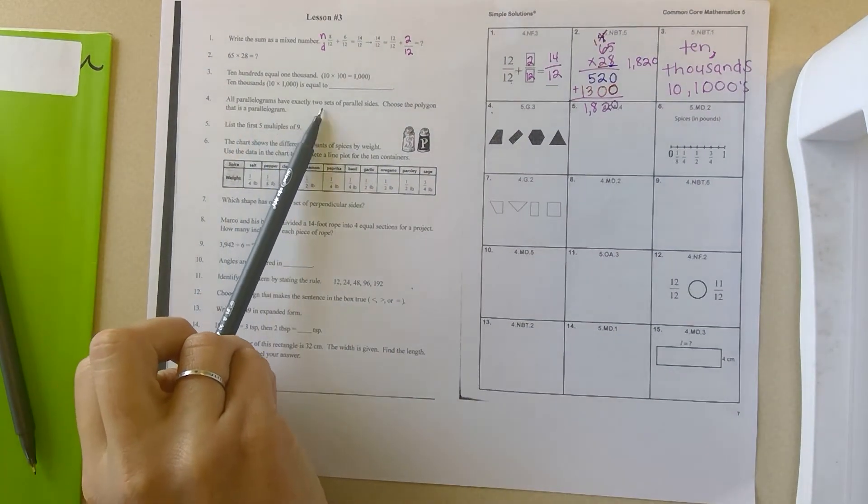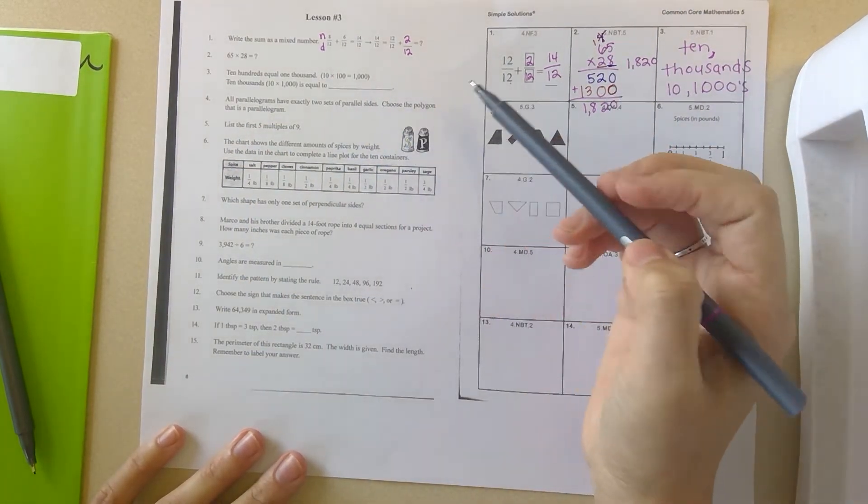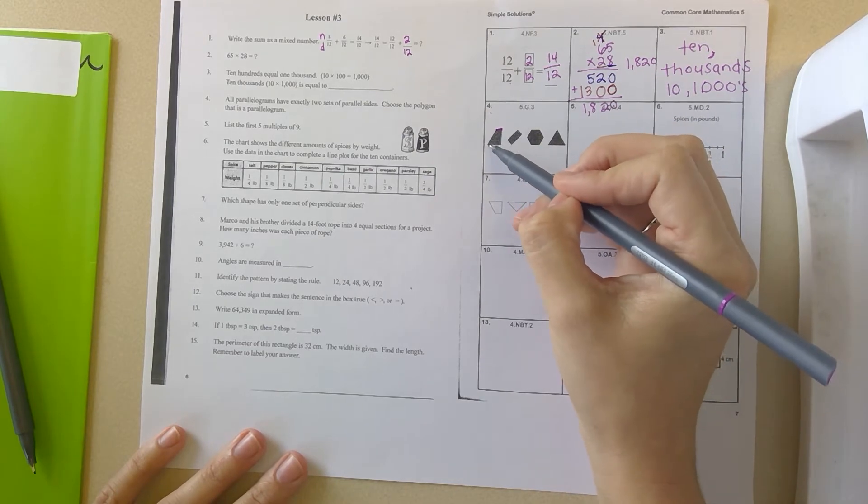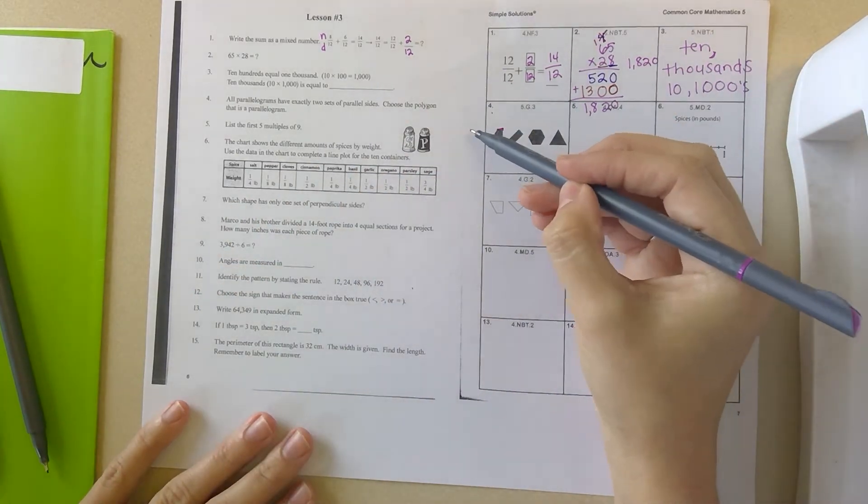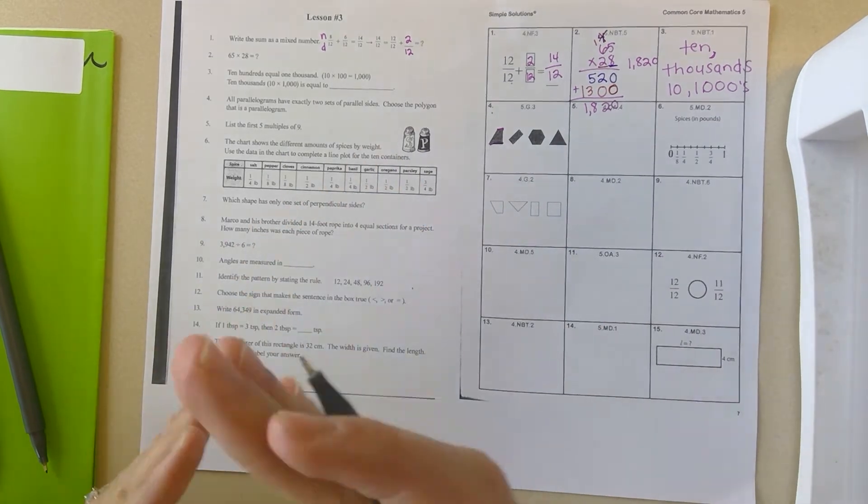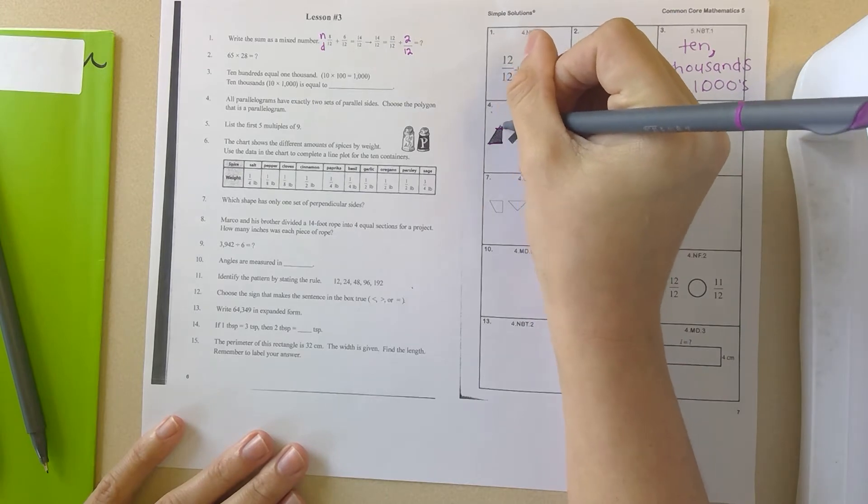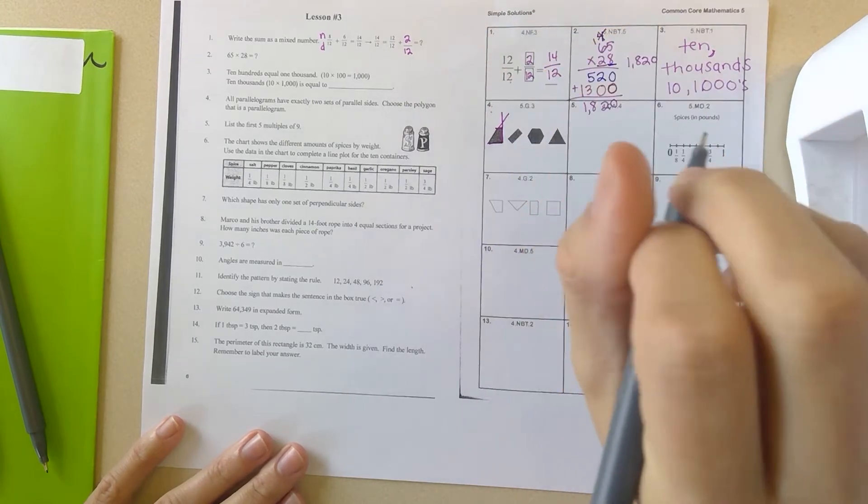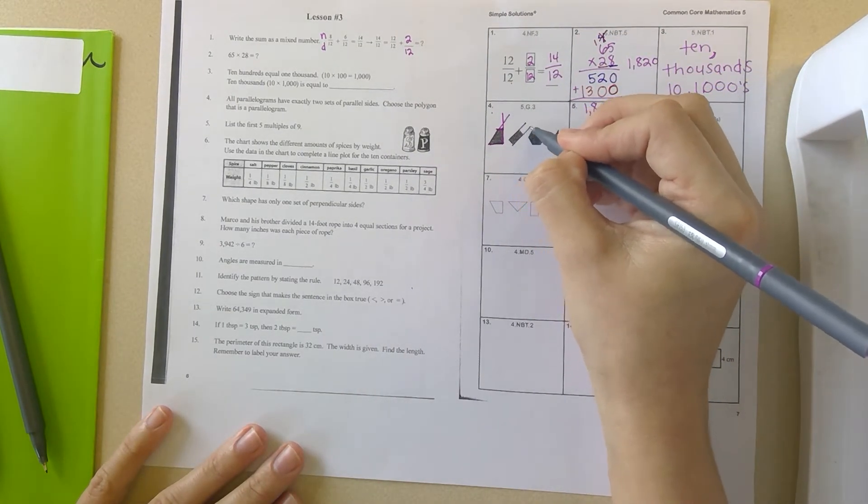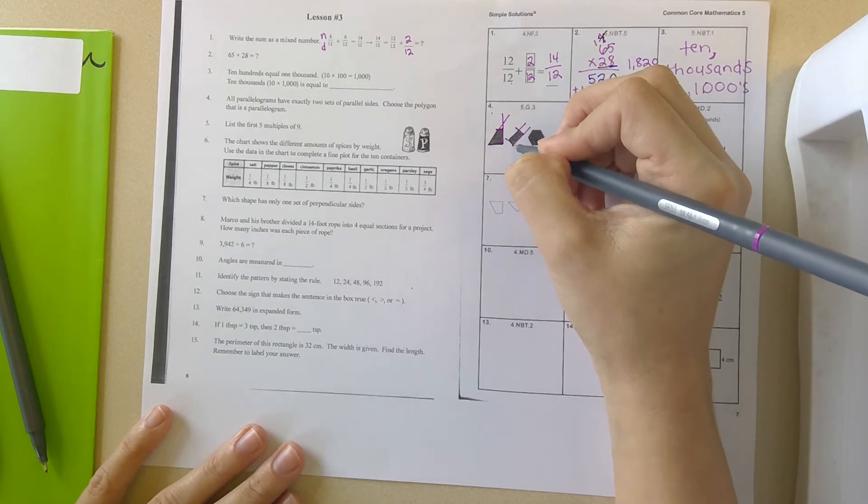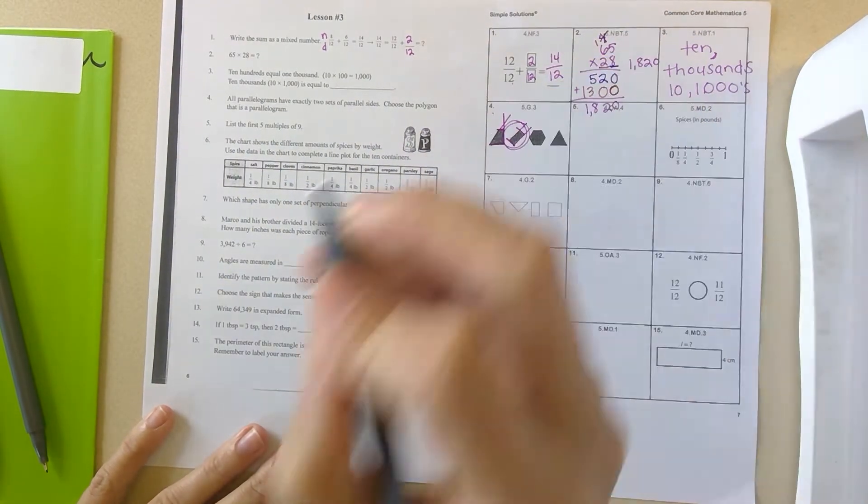Number 4. All parallelograms have exactly two sets of parallel sides. Choose the polygon that is a parallelogram. So two sets of parallel sides. Well, these two, parallel sides mean that they basically go in the same direction no matter how far it goes. So if I kept drawing these lines on and on and on, they would never intersect or overlap. So these two are parallel. However, these two are not because they would actually intersect if I continued those two. So that would not be it.